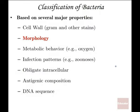Classification is based on several major properties: the cell wall, morphology, metabolic behavior, infection patterns, whether they are obligated to be intracellular, antigenic composition, and DNA sequence. We are discussing each of these characteristics separately in several lectures. Today we are talking about morphology; future lectures will cover the other qualities.